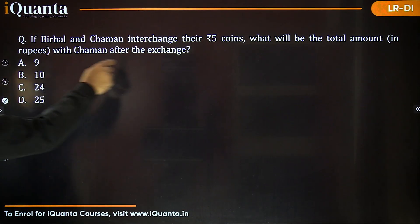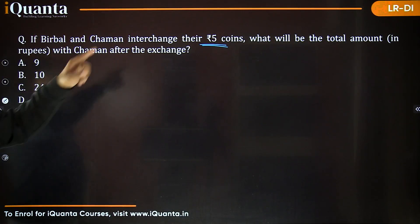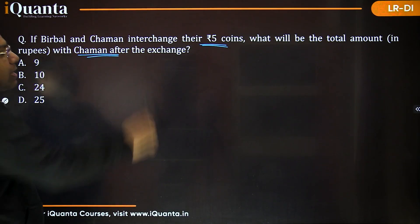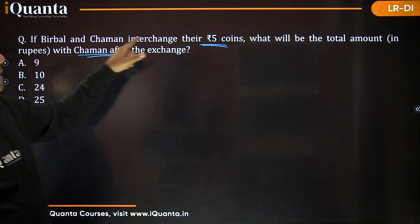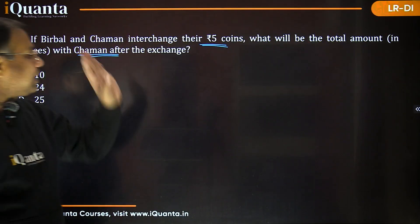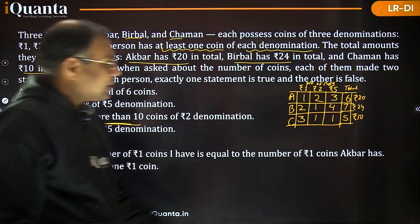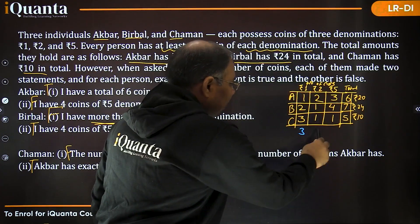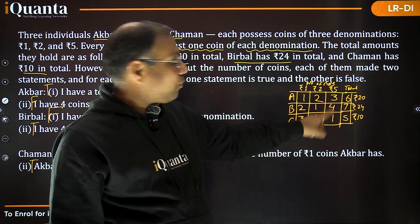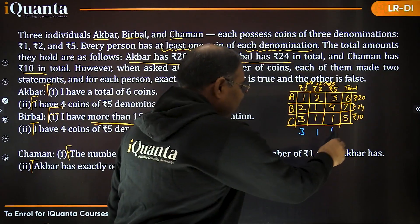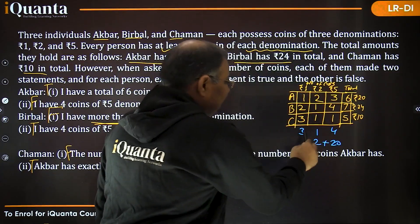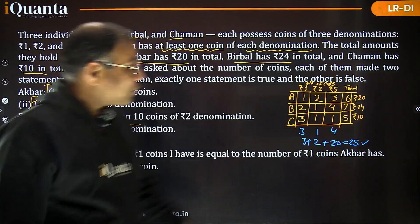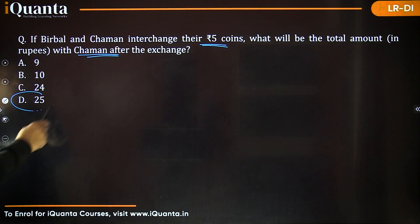Question 2: If Birbal and Chaman interchange their ₹5 coins, what will be the total amount with Chaman after the exchange? After exchange, Chaman would have 3×₹1, 1×₹2, and 4×₹5 (getting Birbal's 4 five-rupee coins). That gives 3+2+20=₹25. The answer is option D: twenty-five.